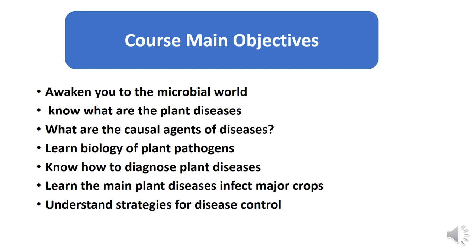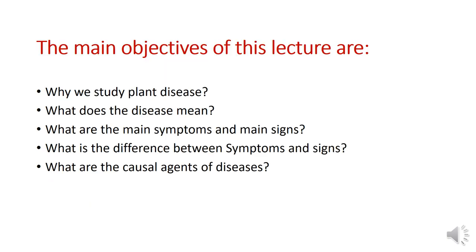The main objectives of this first lecture are: first, why we are studying plant disease and what is the importance of studying plant disease; second, what does disease mean; third, what are the main symptoms and signs and what is the meaning of symptoms and signs; fourth, what are the differences between symptoms and signs; and fifth, what are the causal agents which cause plant diseases.